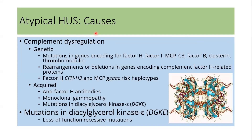Atypical HUS occurs because of complement dysregulation. This dysregulation can be genetic or acquired. Genetic dysregulation can occur because of mutations in genes encoding Factor H, Factor I, Factor B, and there can be rearrangements or deletions in genes encoding complement factor H-related proteins. Acquired complement dysregulation can occur because of anti-Factor H antibodies, monoclonal gammopathy, and mutations in diacylglycerol kinase epsilon.